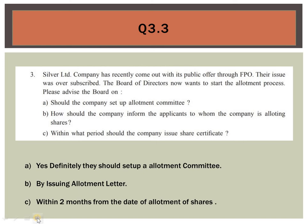How should the company inform the applicants to whom shares are being allotted? The company informs the applicants by issue of an allotment letter or notice. Third: within what period should the company issue the share certificate? It is already in the textbook — within two months from the date of allotment of shares. These months and dates you have to remember because they can twist the question, but the answer is still there.